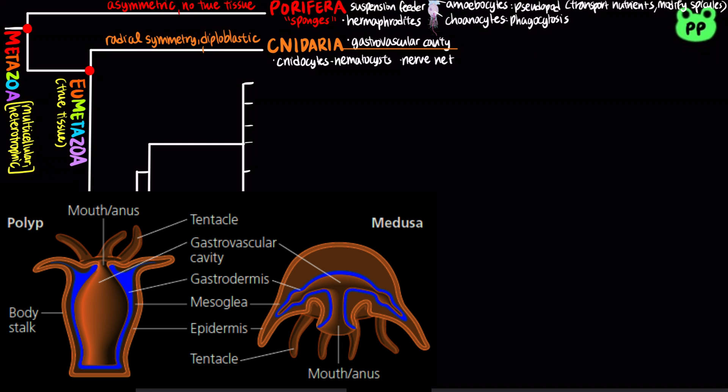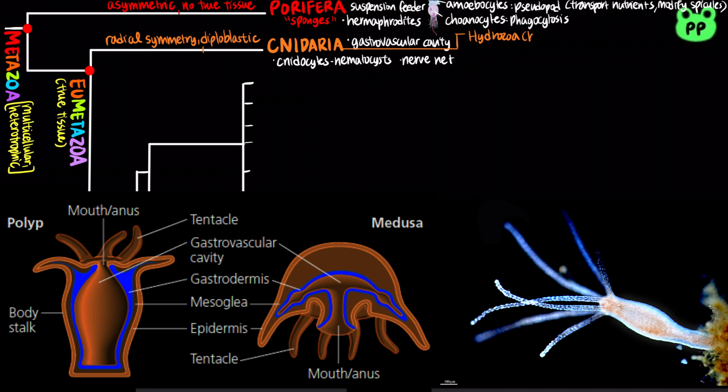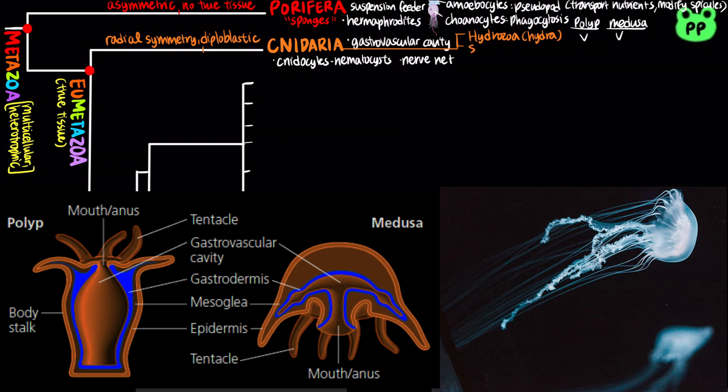The phylum Cnidaria is divided into four major classes. The class Hydrozoa includes hydras; they are mostly marine and contain both polyp and medusa stages. The class Scyphozoa includes jellies and sea nettles — marine animals with medusa body plans that lack a polyp stage.